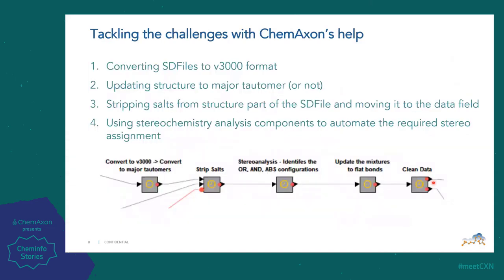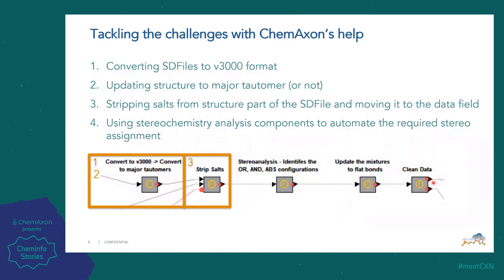The major challenges are the four that I've mentioned. The first is to convert to V3000 format. Secondly, we do an update of the structure to the major tautomer — or not, as sometimes we don't want to do that, and we have a configuration for that as well. The third thing is to strip the salts from the structure and move them to the data field. And finally, the fourth component is to assign the stereo category for registration.